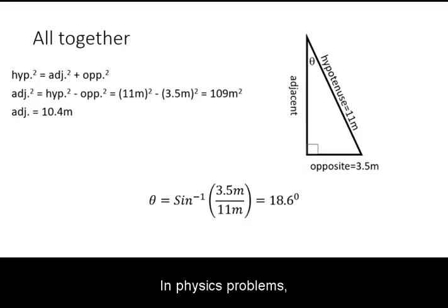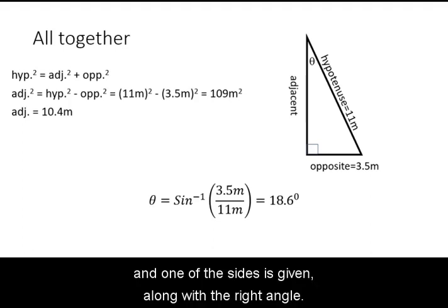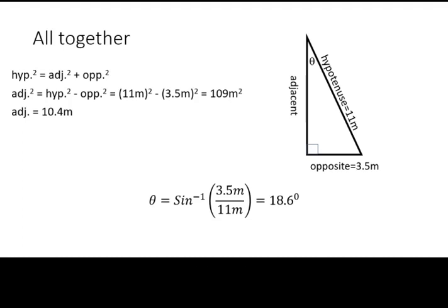In physics problems, it is common that only the hypotenuse and one of the sides is given along with the right angle. In this case, you figure out the remaining side using the Pythagorean theorem and the angle using SOH CAH TOA.